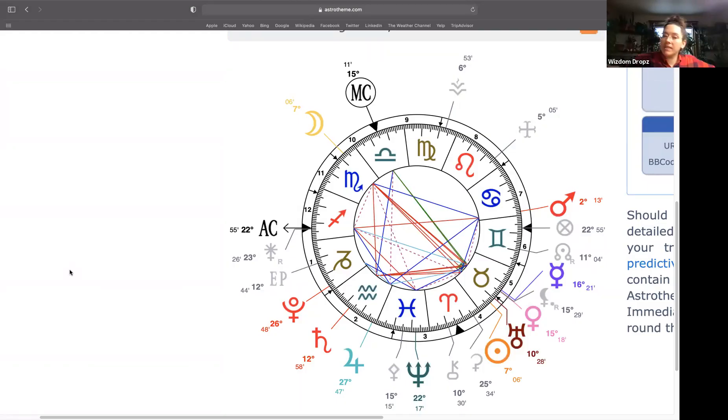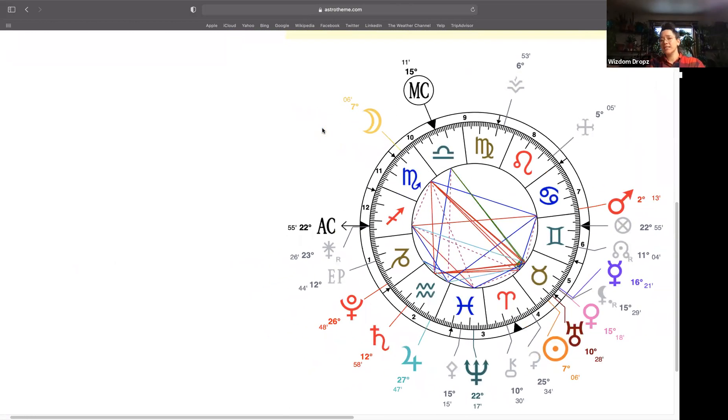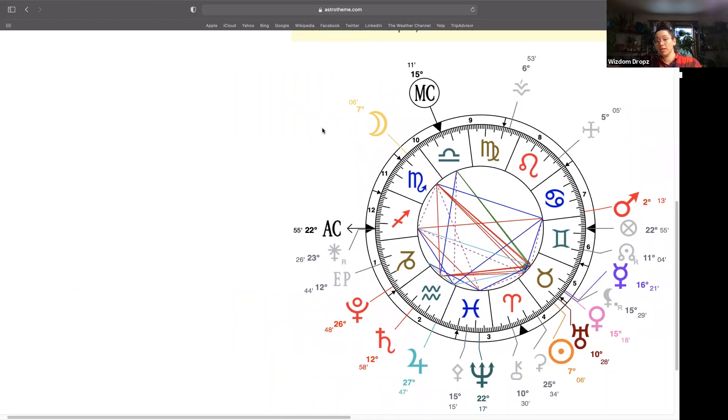So if you are a Sag ascendant, sun or moon, then this video is for you, this portion here. So Sag, this lunation is going to be happening in your 12th house. Holy freaking guacamole. This is intense. Why is this intense? I'm so glad you asked.